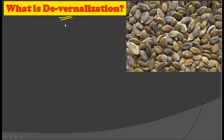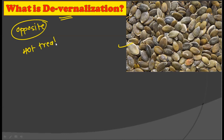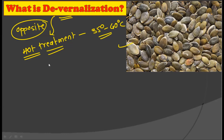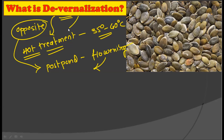There is another term called de-vernalization, which is exactly opposite to vernalization. If you give the seeds a hot treatment instead of cold treatment — generally in vernalization we give cold treatment, but in de-vernalization a hot treatment of nearly 35 to 40°C is given — this will have the exact opposite reaction, making the plant postpone its flowering. In vernalization we prepone the flowering, but in de-vernalization the flowering is postponed.